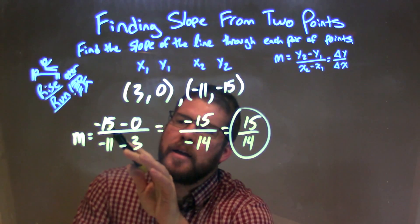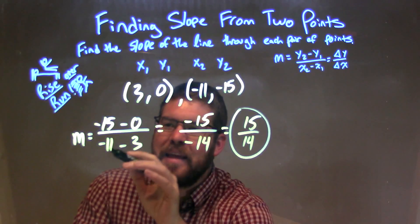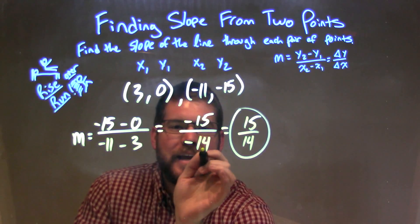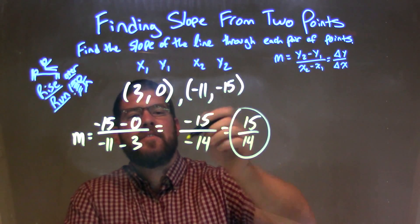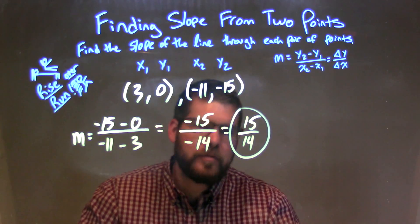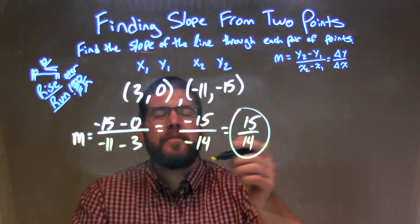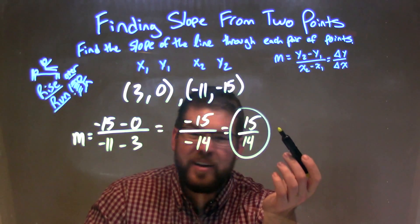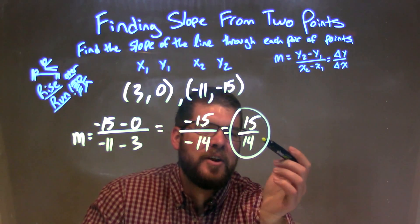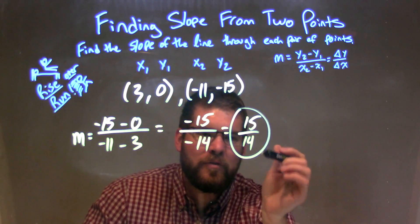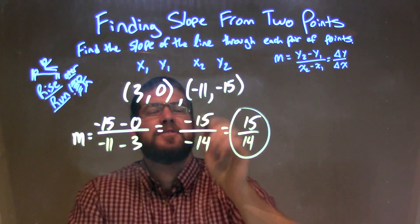I then simplify that. Negative 15 minus 0 is negative 15, and negative 11 minus 3 is negative 14. We have negative divided by negative, which should be positive, so we rewrote that to be positive. That's our final answer: positive 15 over 14. That's our slope between these two points.